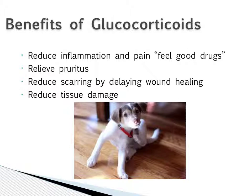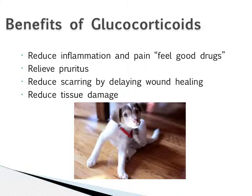We use these because they are feel-good drugs — they reduce inflammation and pain, making animals feel better. Especially if they're itchy and scratching from pruritus, they'll feel much better with glucocorticoids. They can also reduce scarring. For example, in ophthalmic surgical procedures, we may want healing to be a little slower so there's less scarring. And we may use them to reduce tissue damage to tendons and ligaments in cases of lameness.